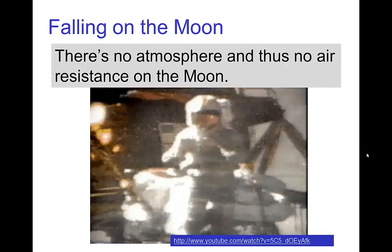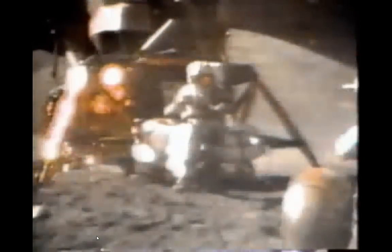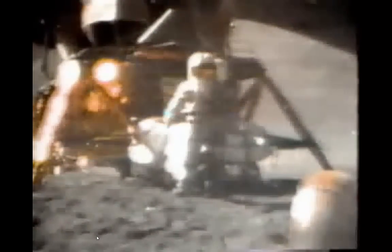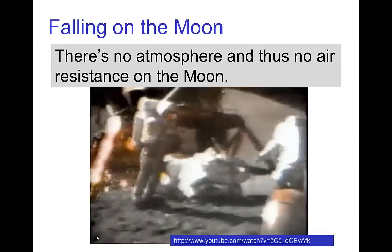Another way of demonstrating the same thing is to find a place where there is no atmosphere, so there's no air resistance, and a good candidate would be the moon. So let's look at this clip from one of the Apollo missions. Well, in my left hand I have a feather, in my right hand a hammer. And I guess one of the reasons we got here today was because of a gentleman named Galileo a long time ago, who made a rather significant discovery about falling objects in gravity fields. And we thought where would be a better place to confirm his findings than on the moon. And so we thought we'd try it here for you. The feather happens to be appropriately a falcon feather for our falcon. And I'll drop the two of them here, and hopefully they'll hit the ground at the same time. How about that? It proves that Mr. Galileo was correct in his findings.